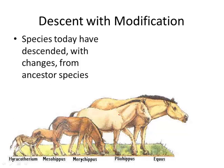Here is the modern horse all the way on the right, and we have what the horse evolved from back in the day. You can see it changing over time. This is the idea of descent with modification — that species alive today have descended from ancestor species, but with changes. There must have been a greater fitness for animals that were larger; maybe they were able to run faster.